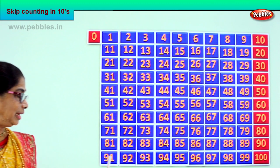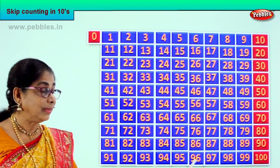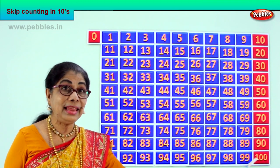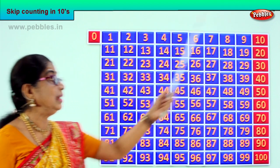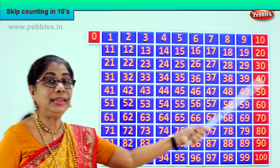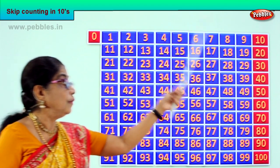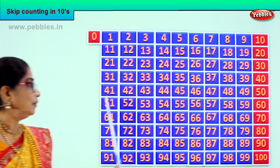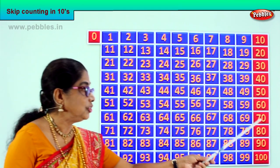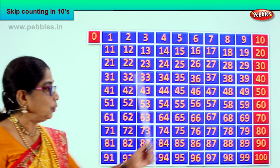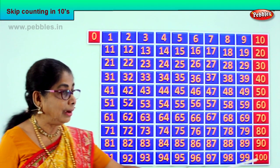After 90: 91, 92, 93, 94, 95, 96, 97, 98, 99, 100. From 1 to 10, 11 to 20, 21 to 30, 31 to 40, 41 to 50, 51 to 60, 61 to 70, 71 to 80, 81 to 90, 91 to 100.